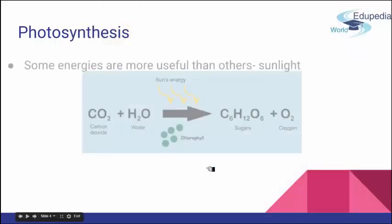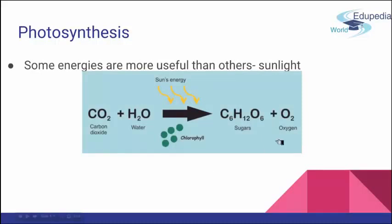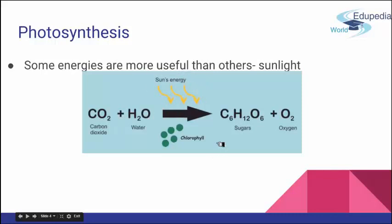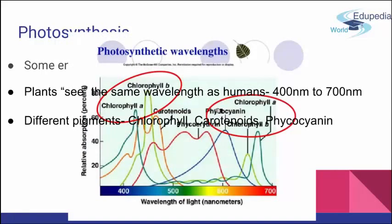Some energies are more useful than others, and sunlight is definitely driving photosynthesis, which is directly the source of all available energy for other organisms on this planet. As a reminder: carbon dioxide plus water, with chemical energy driven by sun radiation, drives chlorophyll to produce simple sugars and release oxygen — which is basically the equation for life on Earth. Importantly, not only chlorophyll is a pigment able to produce carbohydrates using sunlight.